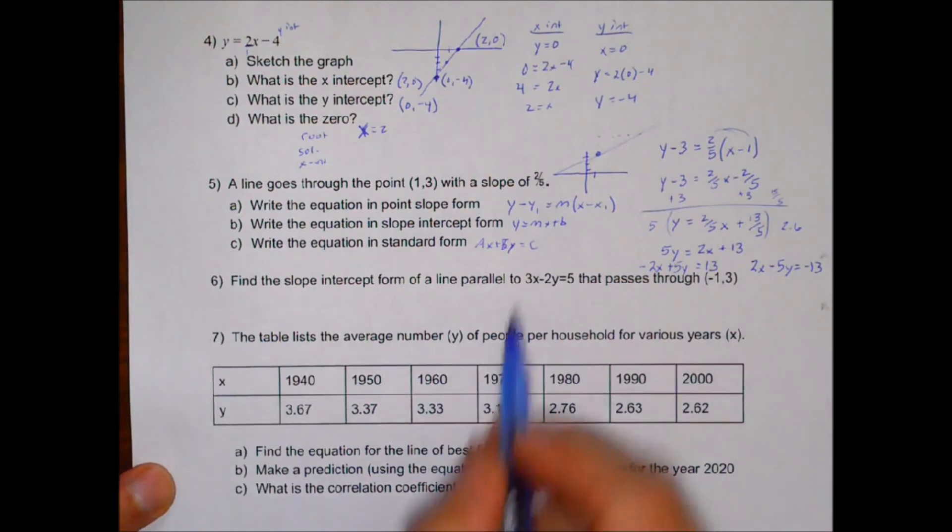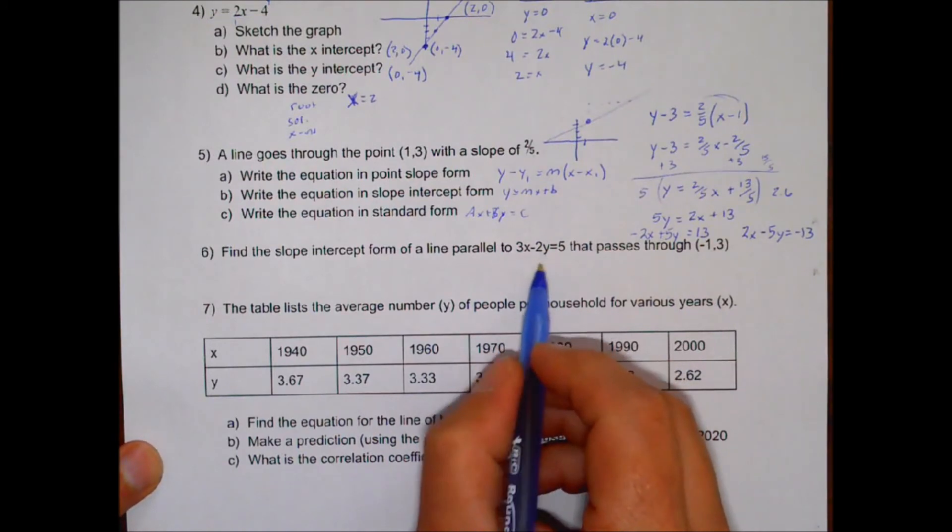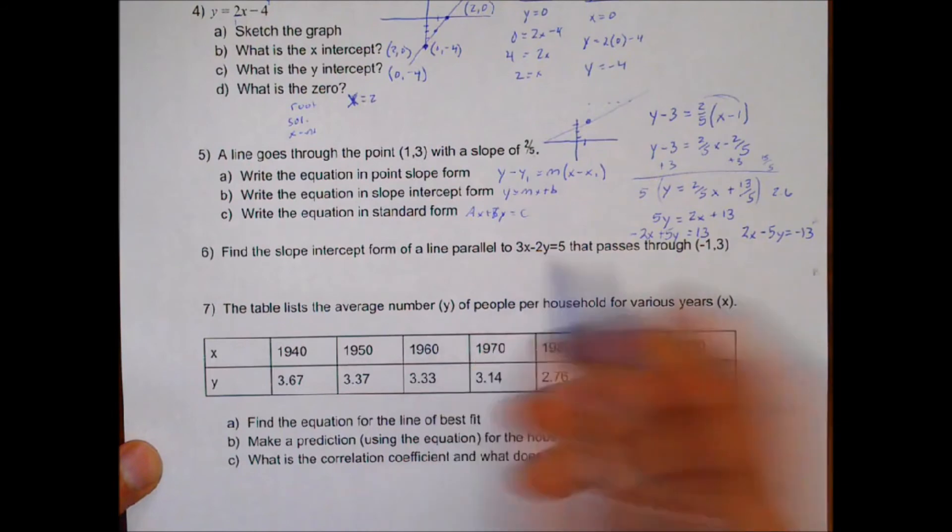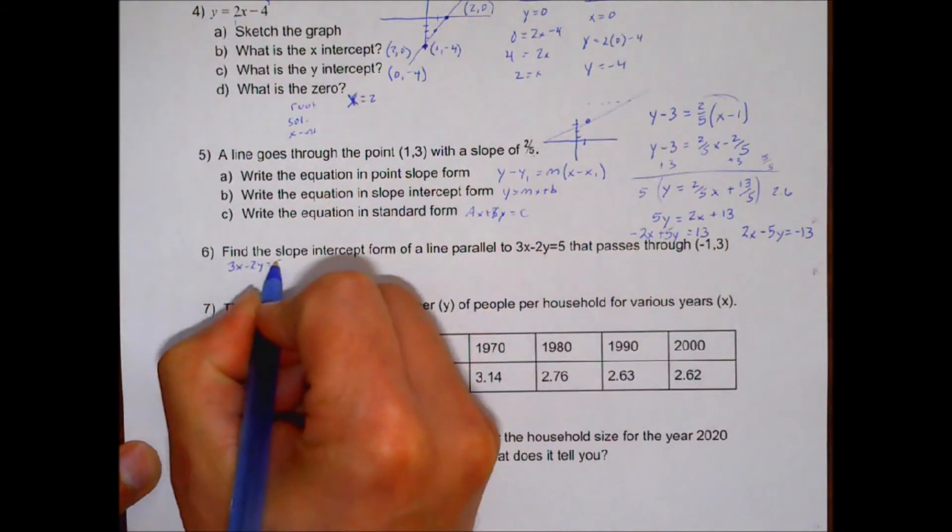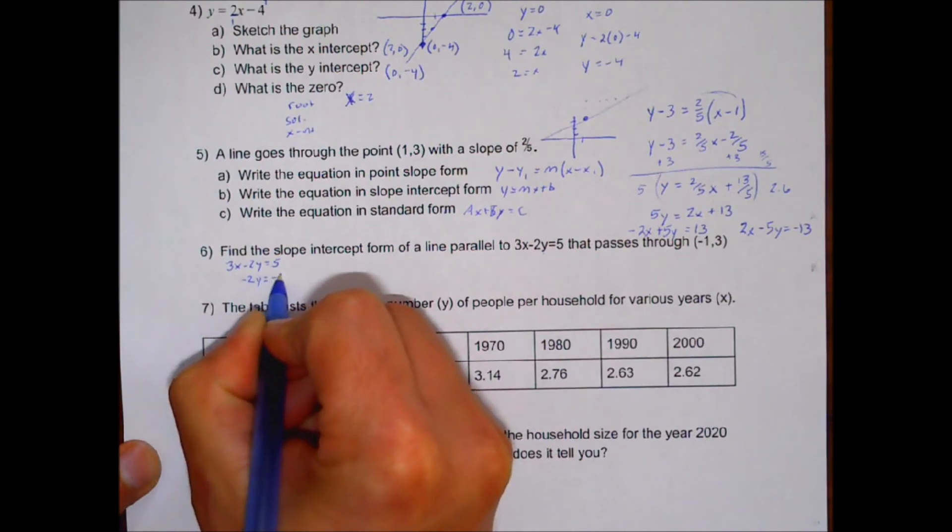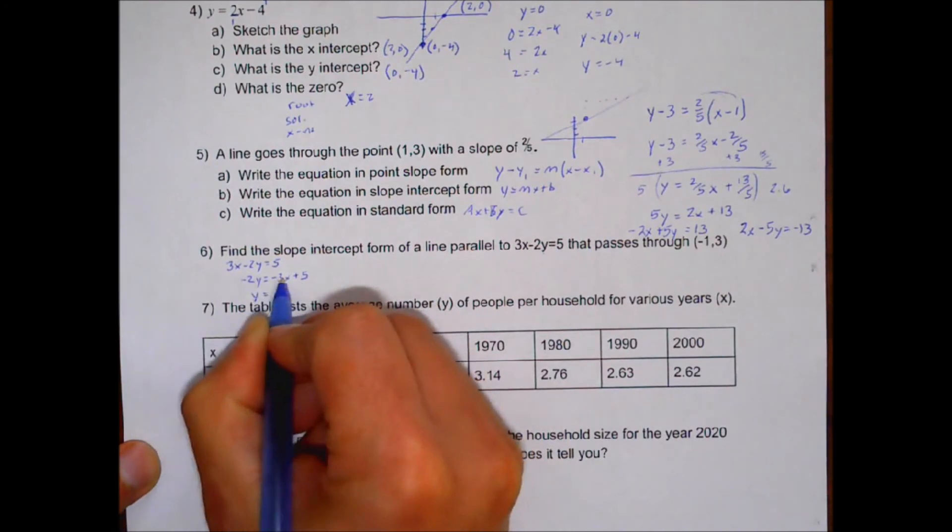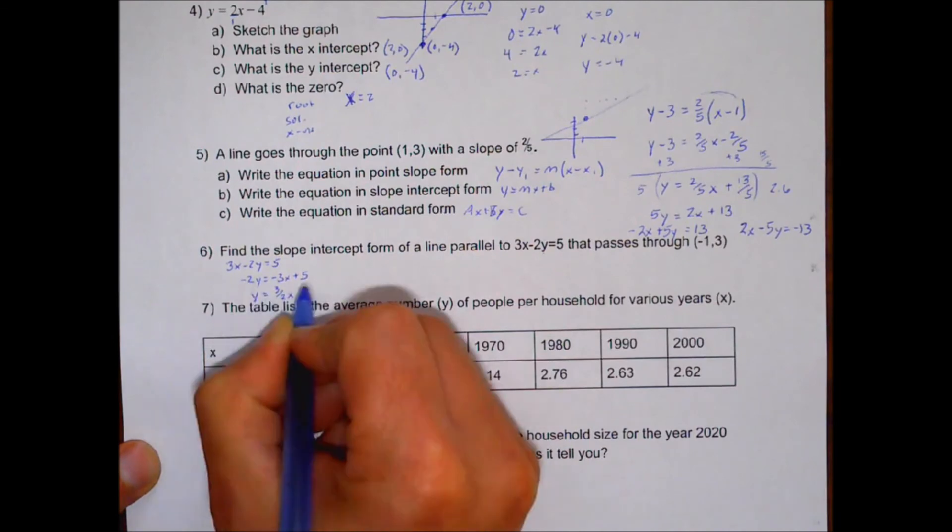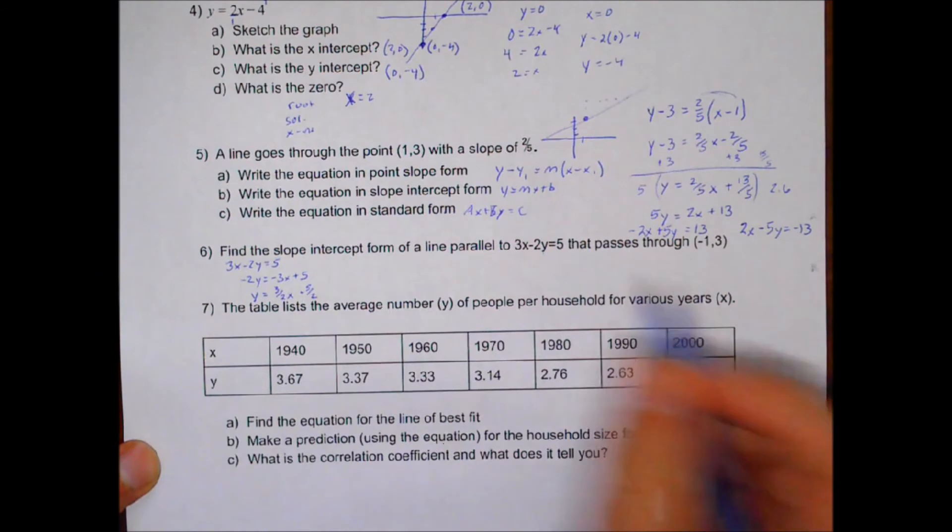Number 6. We know it's going to be parallel to this. So if we know it's going to be parallel, that means it has to have the same slope, which means we've got to find the slope of this one. So to find the slope, I'm going to solve for y. So I'm going to subtract the 3x over. And I'm going to divide by negative 2. So negative 3 divided by negative 2 is 3 over 2x. And this part doesn't really matter, but if we do that, we would get negative 5 halves there. But we know our slope is 3 over 2.